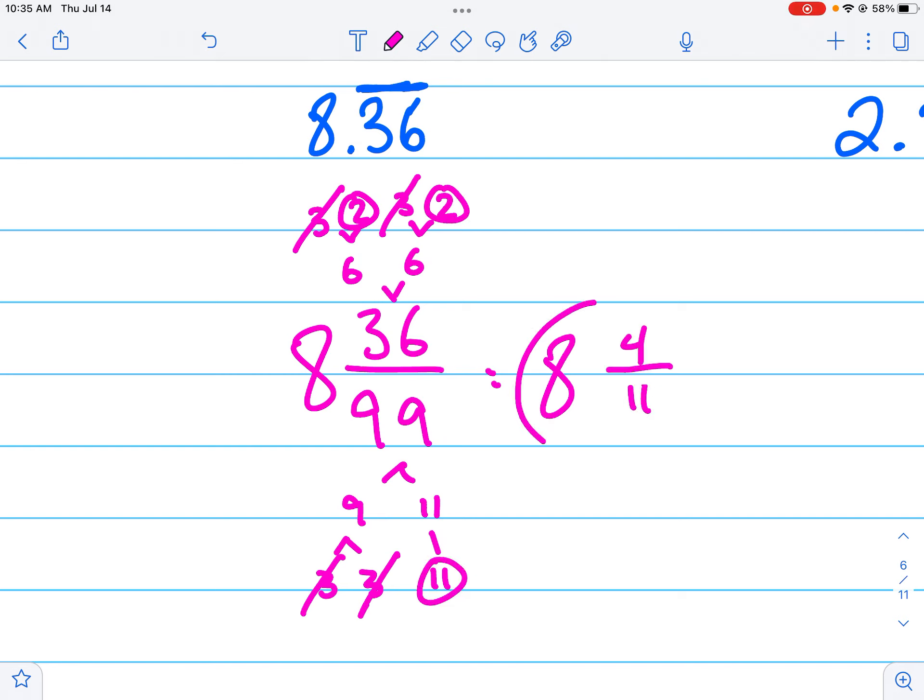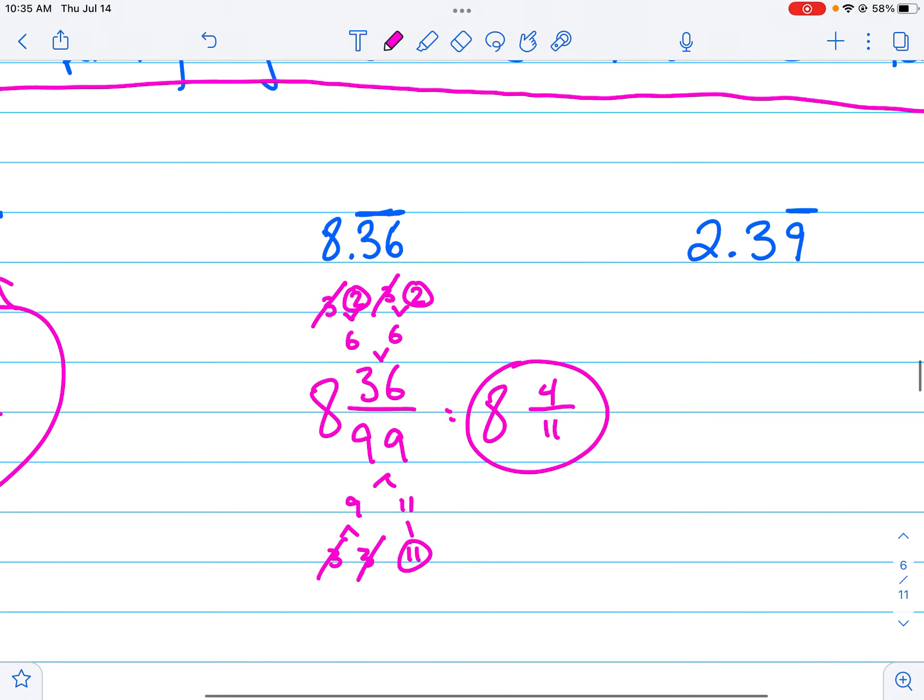So I have my 8 and 2 times 2 is 4. On the bottom I have an 11 and I'm done, right? That's how you convert a repeating decimal to a fraction.